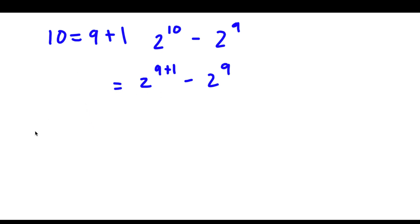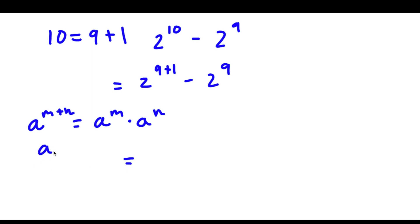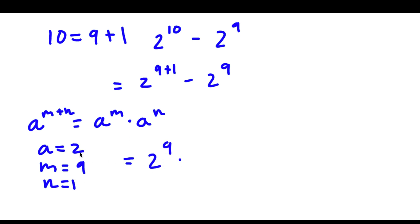Now if I have something in the form a to the power of m plus n, this is equal to a to the power of m times a to the power of n. So 2 to the power of 9 plus 1 — in this case a would be 2, m would be 9, and n would be 1. So I would have 2 to the power of 9 times 2 to the power of 1. Now I have this minus 2 to the power of 9.